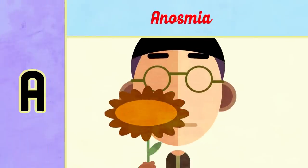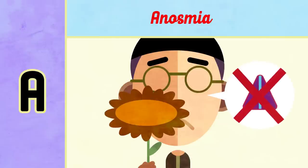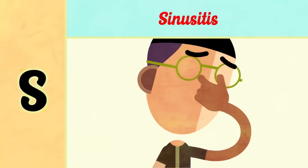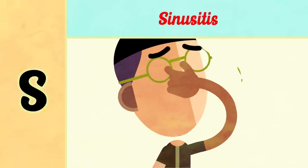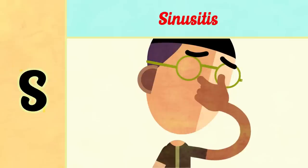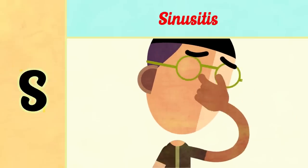A is for anosmia: the patient is unable to smell, as there is failure of inspired air to reach the olfactory region. Loss of smell may be partial or total. S is for sinusitis: since all sinuses have only one opening in the lateral wall of the nose, DNS causes obstruction of these openings due to nasal obstruction.